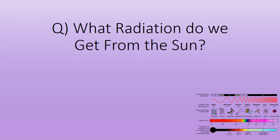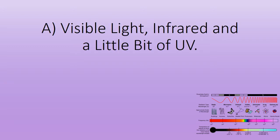What radiation do we get from the sun? Visible light, infrared, and a little bit of UV.